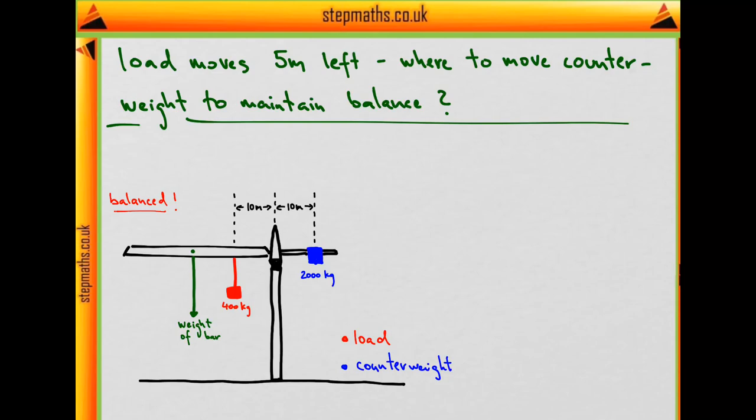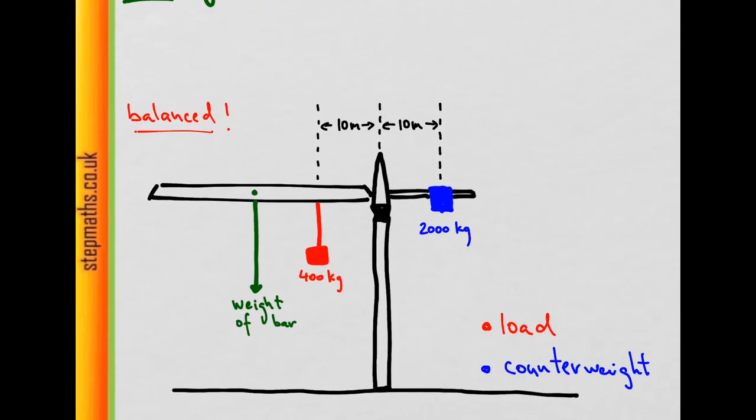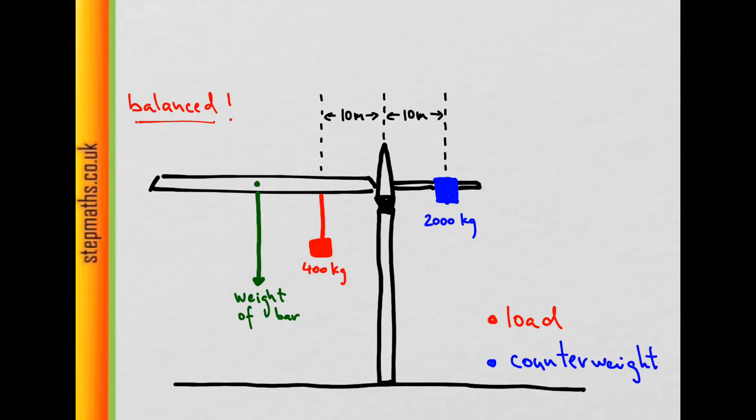In this question we see a picture of a crane which has loads and a counterweight on it. This crossbar itself has its own weight which is pushing down, and they give us all the important masses and distances of the respective things attached to the crane. The key piece of information is that the whole system is balanced - there is no motion around this point where the crossbar meets the support.